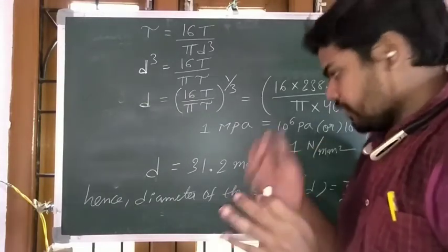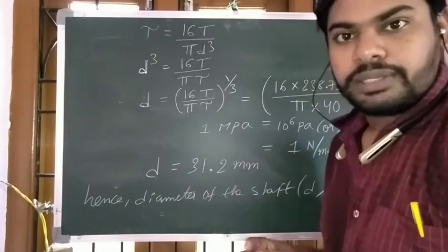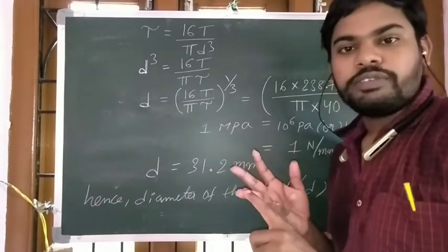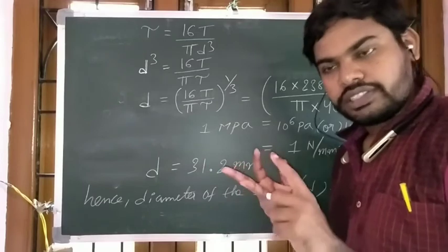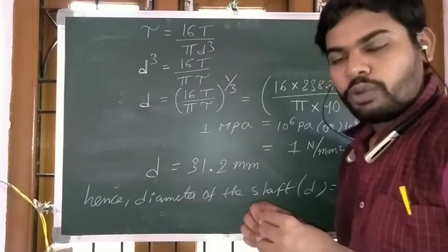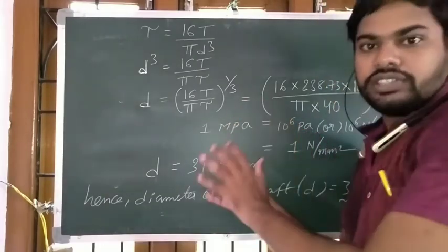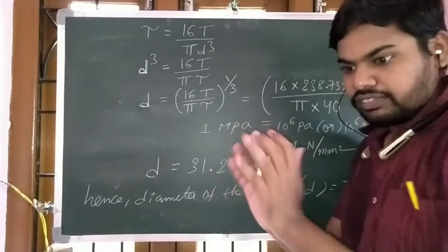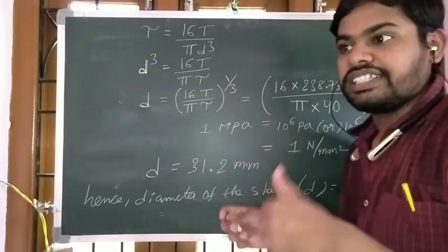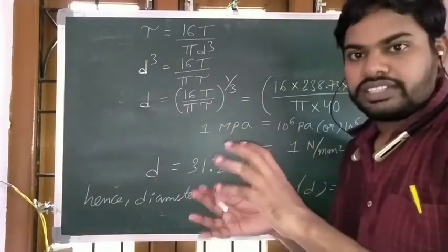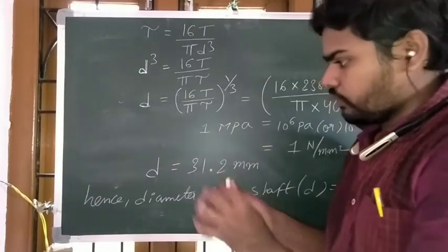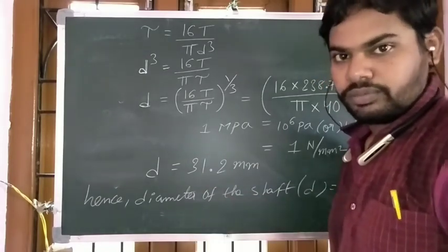Simple procedure. You just need to remember the power formula P equals 2πNT by 60, and the relation between torque and shear stress tau equals 16T by pi D cube, and also the torsion equation T by J equals G theta by L equals tau by R. A shaft can be designed based on strength — considering maximum torque transferred — or based on rigidity, considering shear modulus and angle of twist using the torsion equation. This is the simple procedure to solve any shaft problem. Thank you.